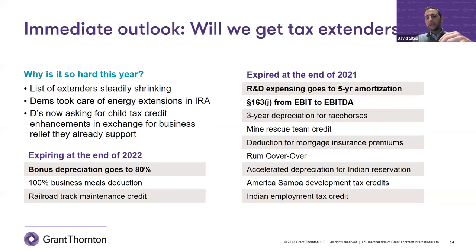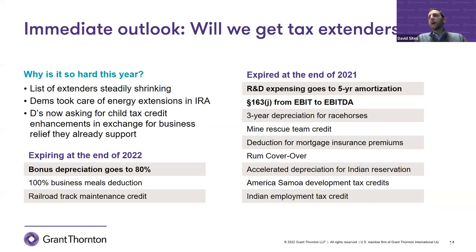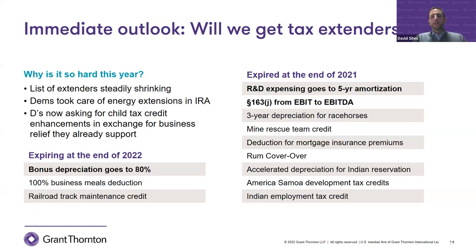Here we are five years later and the revenue raisers are kicking in. Can Congress deal with these? Is there going to be a bill to fix R&D expensing and the interest limitation? It's unlikely. We have a situation where it used to be possible to come together and get extender legislation done, because Democrats were interested in credits around clean energy incentives — things they were passionate about. But those things were put into the Inflation Reduction Act and are now permanent law. So Democrats have a little less reason to come to the table and fix these business problems that Republicans are responsible for. It's possible we could see a bargain, but that's really what's in front of us right now.